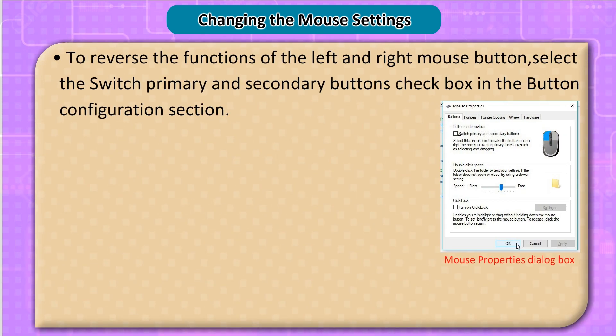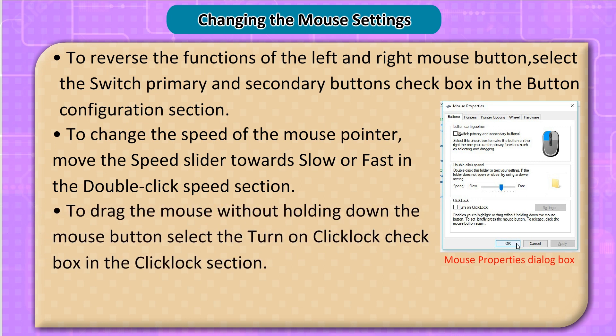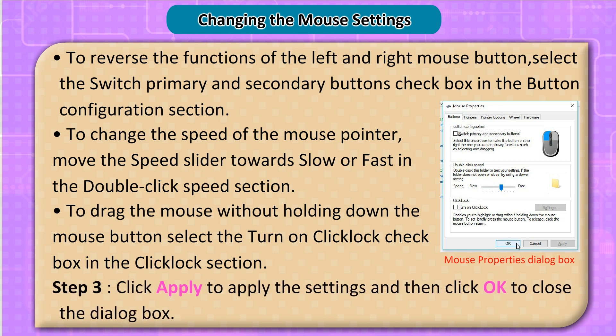To reverse the functions of the left and right mouse buttons, select the Switch Primary and Secondary Buttons checkbox in the Button Configuration section. To change the speed of the mouse pointer, move the speed slider towards Slow or Fast in the Double Click Speed section. To drag without holding down the mouse button, select the Turn On Click Lock checkbox. Step 3: Click Apply to apply the settings and then click OK to close the dialog box.